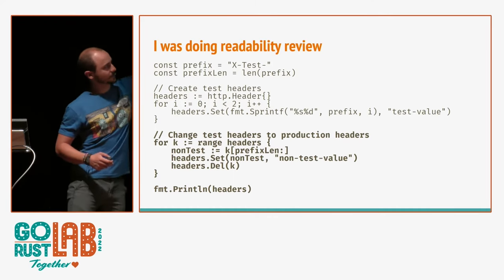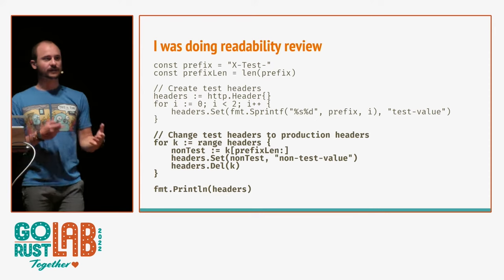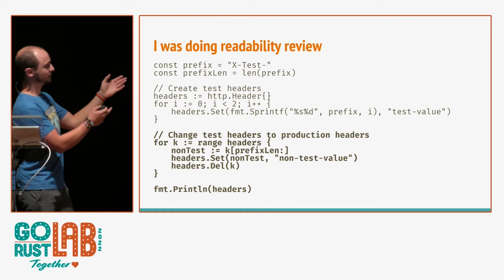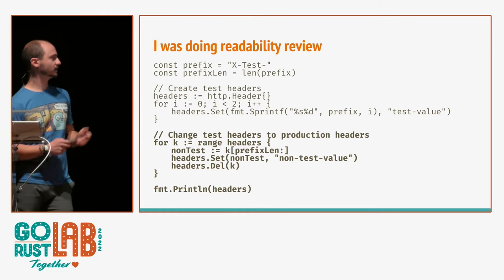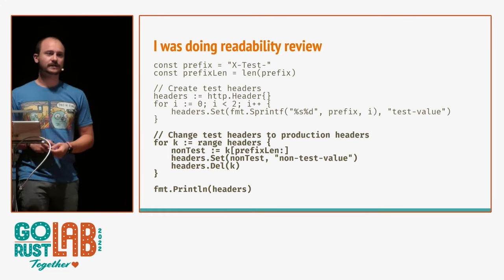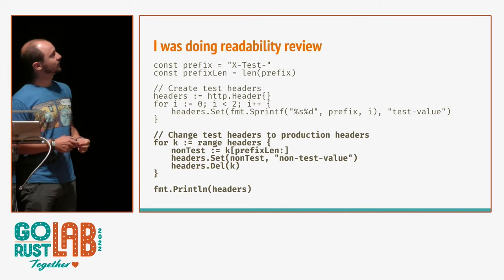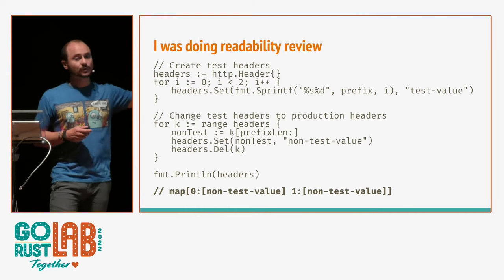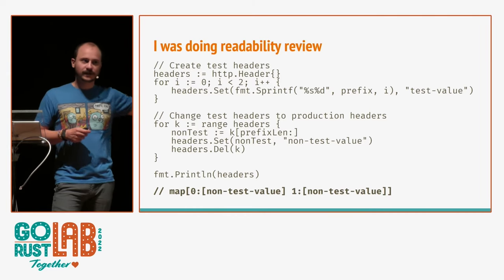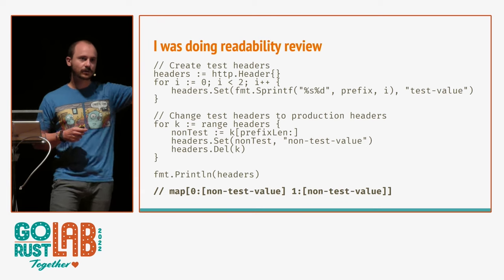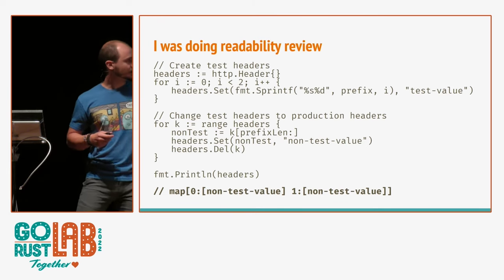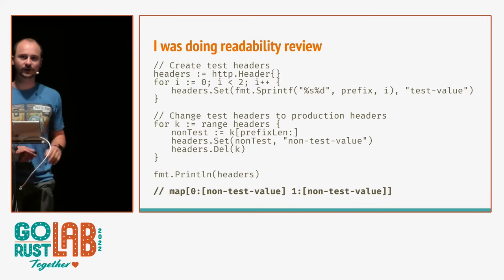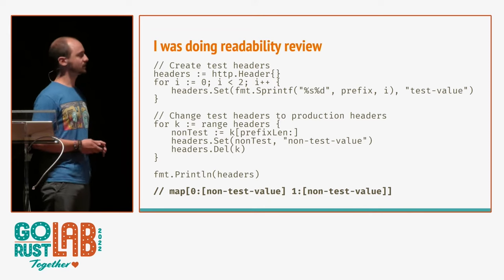Basically these three lines of code were the entirety of what I got for a code review. I get a change list that does something like that — looks good — until I realize something is weird about this code. But if you look at tests, this works. At the end, the headers look like they're supposed to. There is a header zero and a header one, they have a non-test value, and this was working fine for the person who wrote this code.